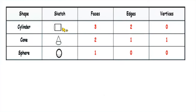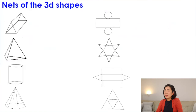For circular-based 3D shapes, there are no patterns — just imagine the shape and count. A cylinder has three faces (top, bottom, and side), two edges (around the top and bottom circles), and no vertices. A cone has two faces (base and side), one edge (around the base), and no vertices. A sphere is perfectly round and has only one face, no edges, and no vertices.